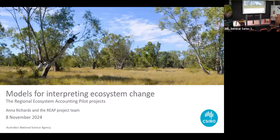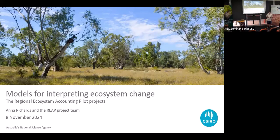The topic is Models for Interpreting Ecosystem Change. We have Dr. Anna Richards today, a plant and soil ecologist and a senior research scientist at the Commonwealth Scientific and Industrial Research Organization, CSIRO, based in Darwin.